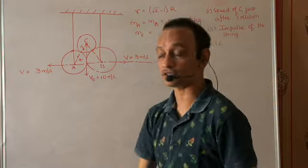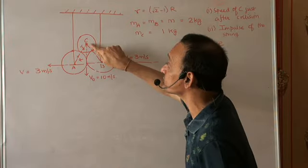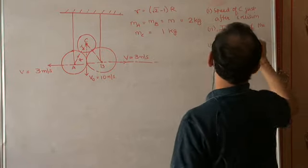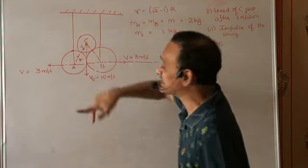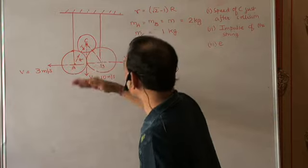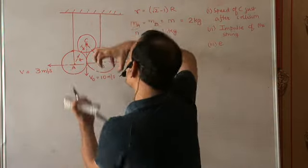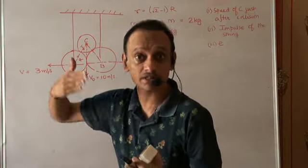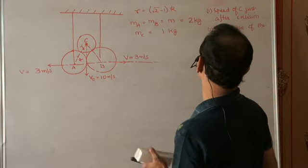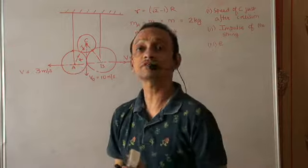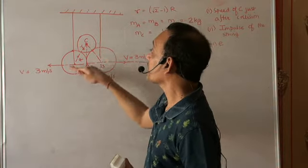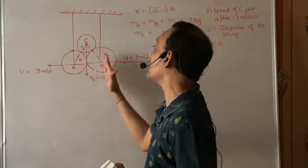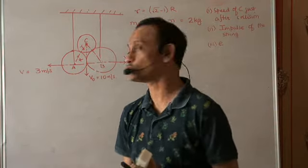We want to find: one, the speed of C right after the impact; two, the impulse of the string — when C hits A and B, there is a sudden buildup of tension in the string, so we want the impulse of that tension; and three, the coefficient of restitution between A and C (or equivalently B and C), which will be the same since A and B are identical.